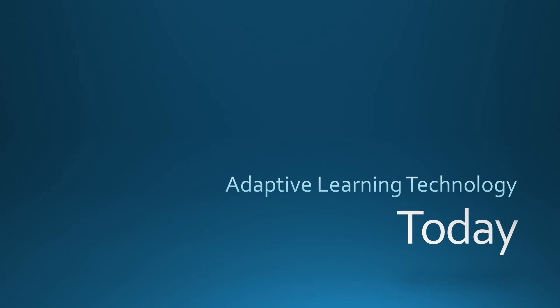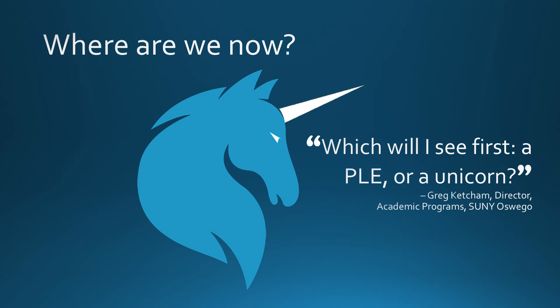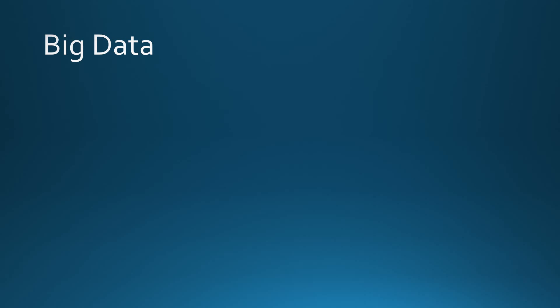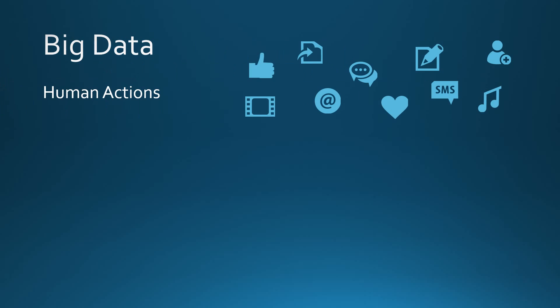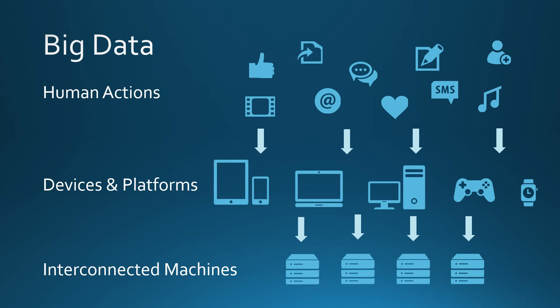With a focus on data and analytics, adaptive learning is part of a suite of emerging technologies linked to personal learning environments. All the combined online human-created data is called big data. Everything we do online creates data. We create, consume, and share data on devices and platforms that is shared with interconnected machines that store, serve, aggregate, and share that data.